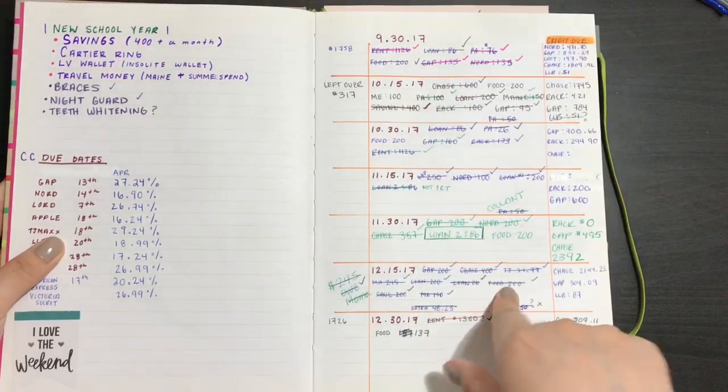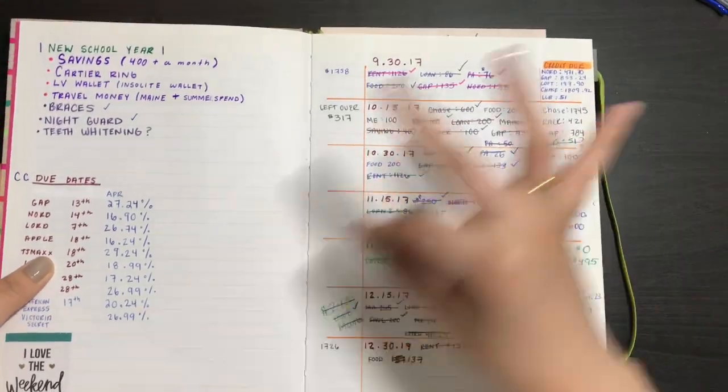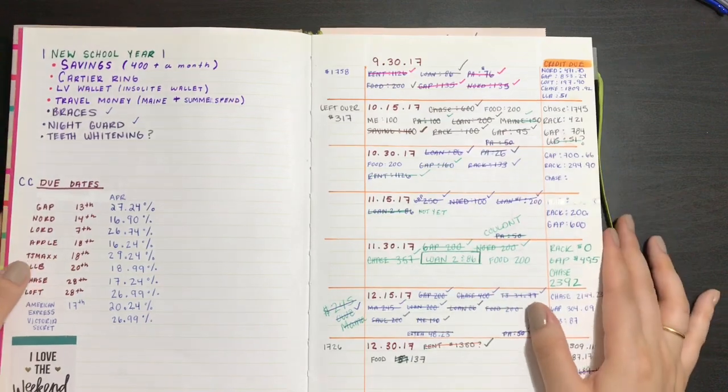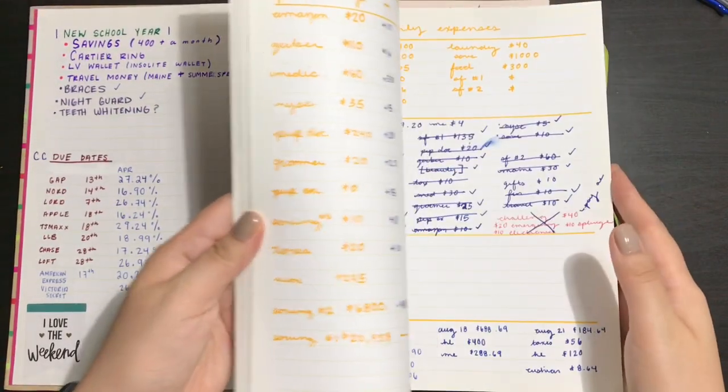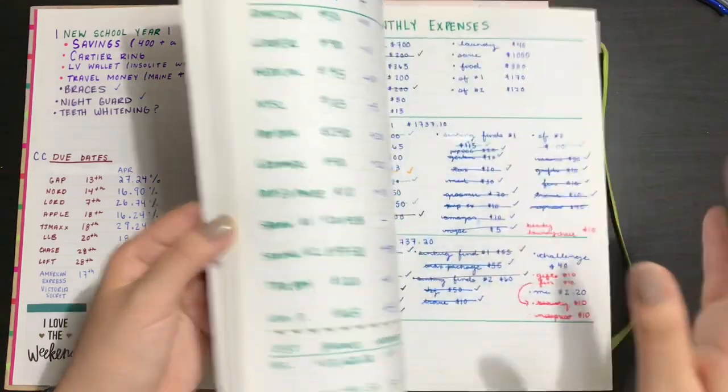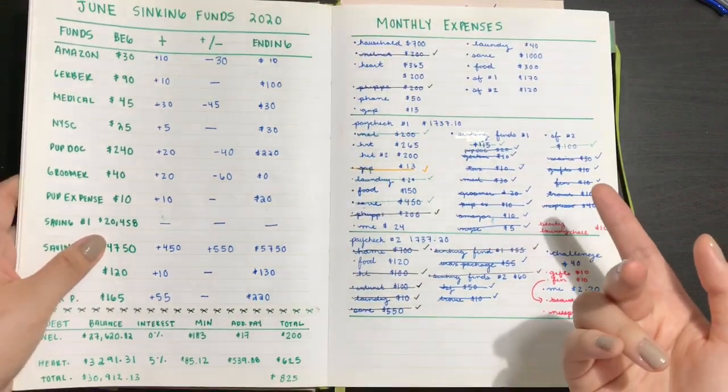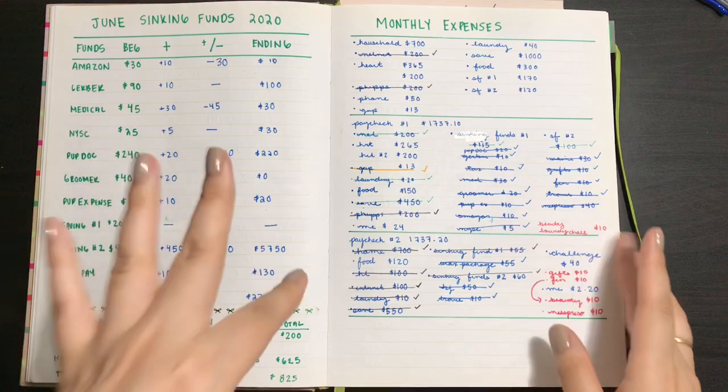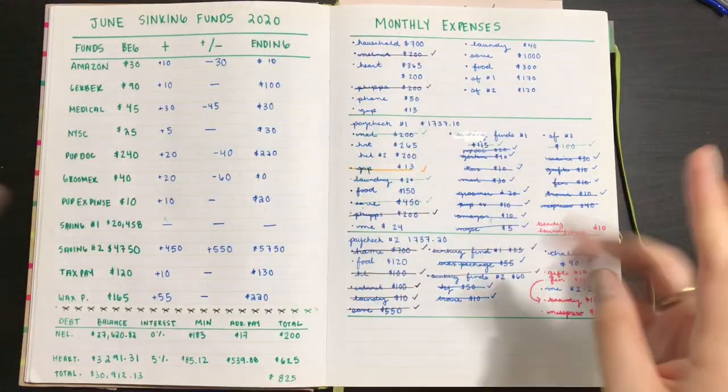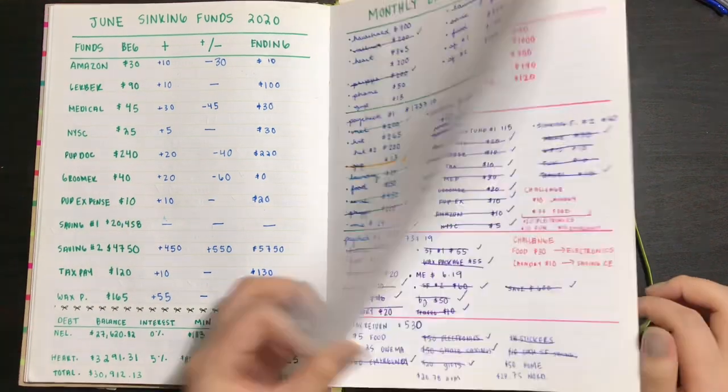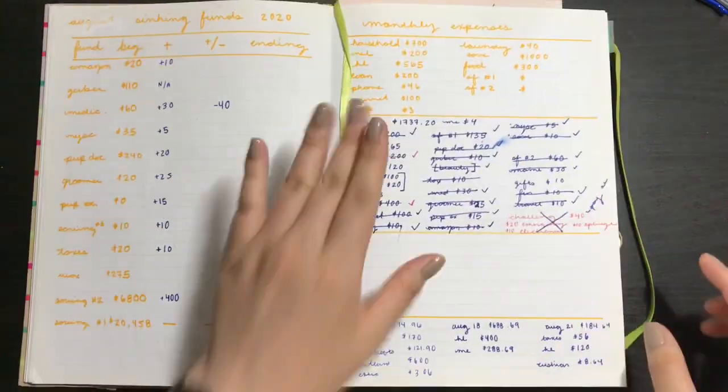This is my financial notebook that I got from Duane Reade for about 10 bucks, so not that bad, and I've had this notebook since 2017, so it's been a good minute. I didn't become good with my money until 2018. 2019 was a full year where I was actually getting my life together.